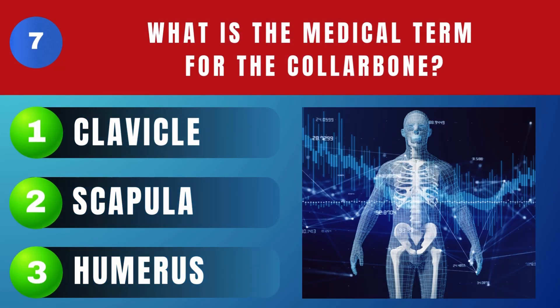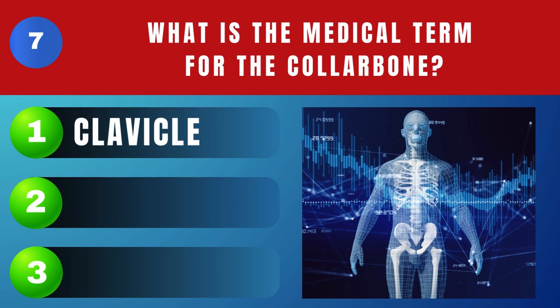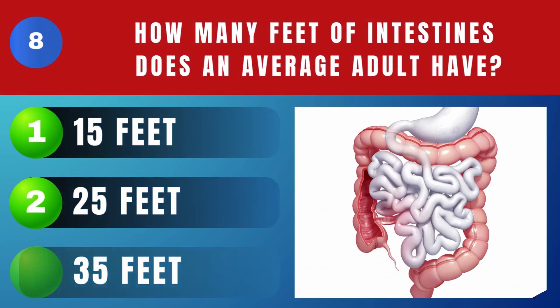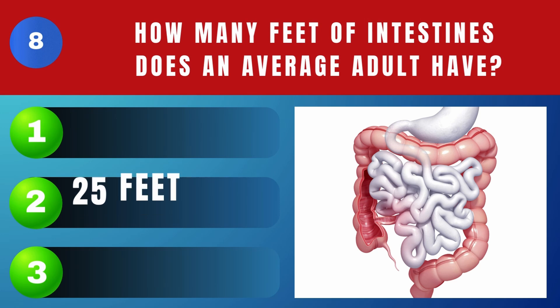What is the medical term for the collarbone? Clavicle. How many feet of intestines does an average adult have? 25 feet.